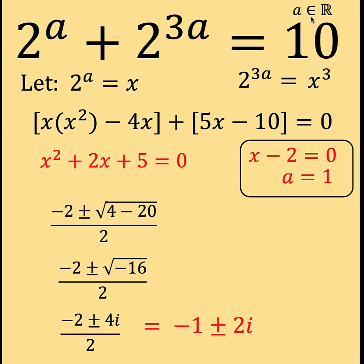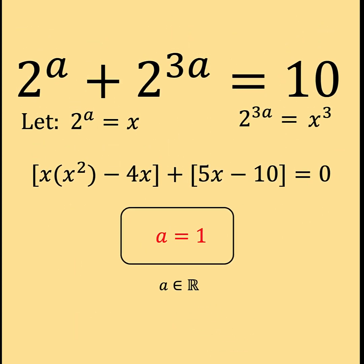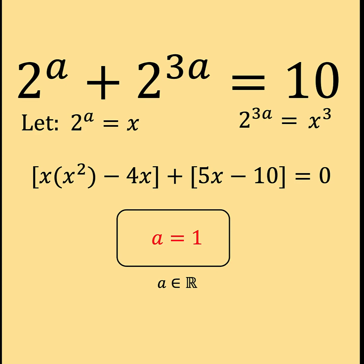And since our A here is required to be an element of the set of real numbers, then negative 1 plus or minus 2i, although these are roots of the given equation, will not be accepted as the answer to this problem because of this restriction. A must be a real number. And so for our final answer, the value of A is A equals 1, which confirms what we already thought to be the value of A. But in mathematics, we cannot simply assume the value until we show mathematically that that is really the answer. Especially for Math Olympiad contests where this problem was taken from. So thank you very much and we hope to see you again in our next video. Bye for now.